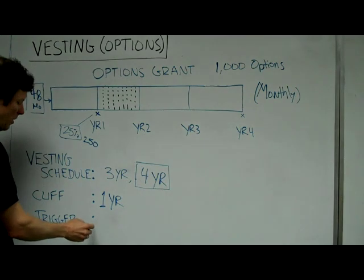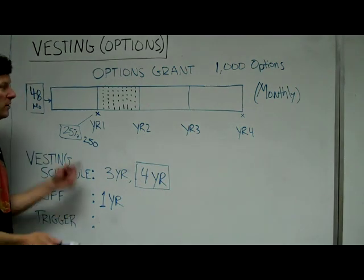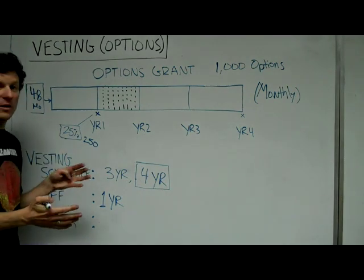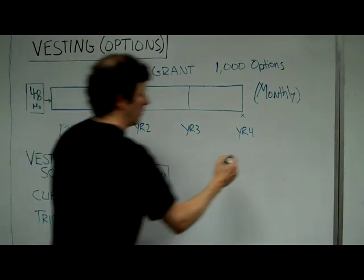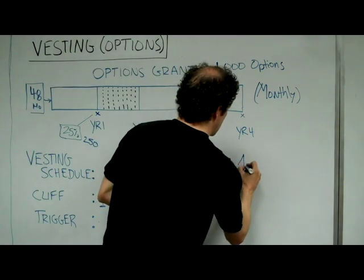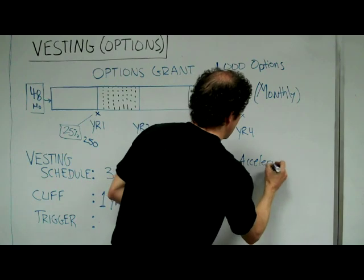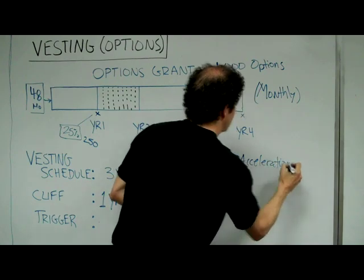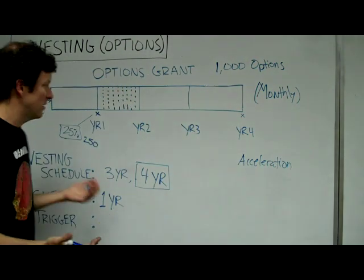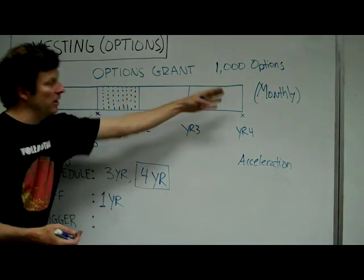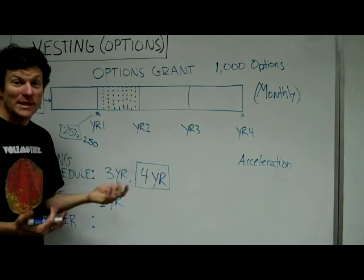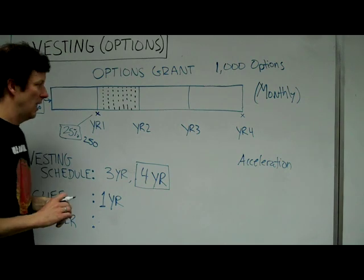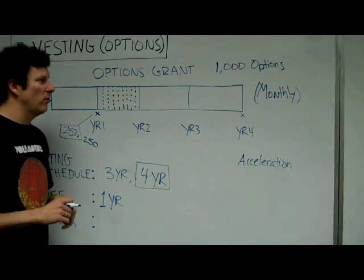Now, there's also something called a trigger. Triggers have to do with another term that we use called acceleration. Acceleration means if something happens, what are the conditions that have to occur for me to get all these options quickly or at once? That's the concept of acceleration.